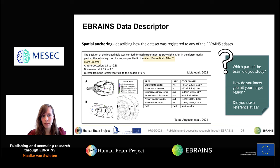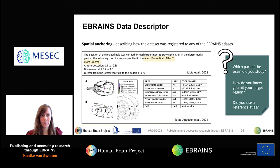Neuroscience datasets typically focus on one or more brain areas, so it's important to provide an accurate description of the anatomical location the work relates to. We use this information to spatially anchor your dataset in one of the eBrains atlases, and linking datasets has the advantage that studies targeting the same brain area are linked and can be directly compared. This section can be filled in various ways — providing a reference atlas with specific coordinates, or using images and annotations.